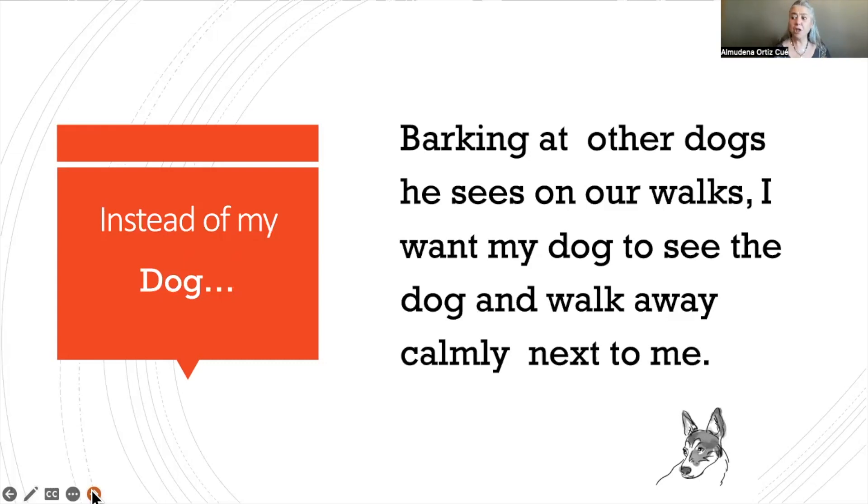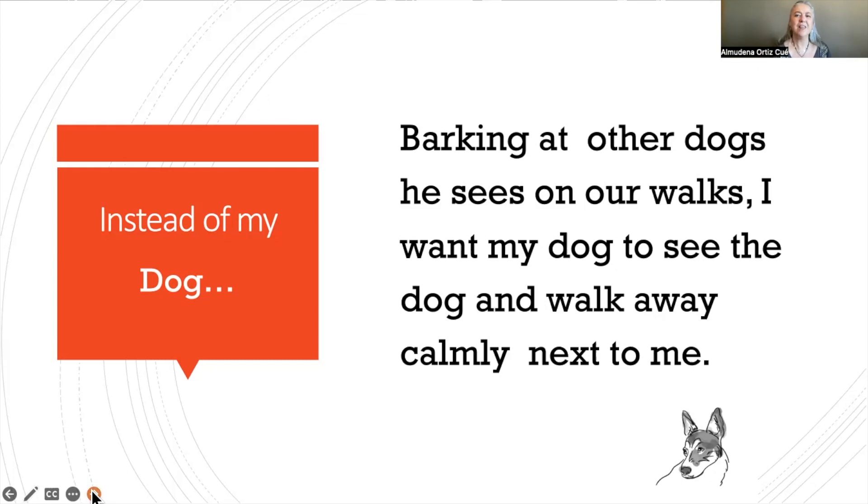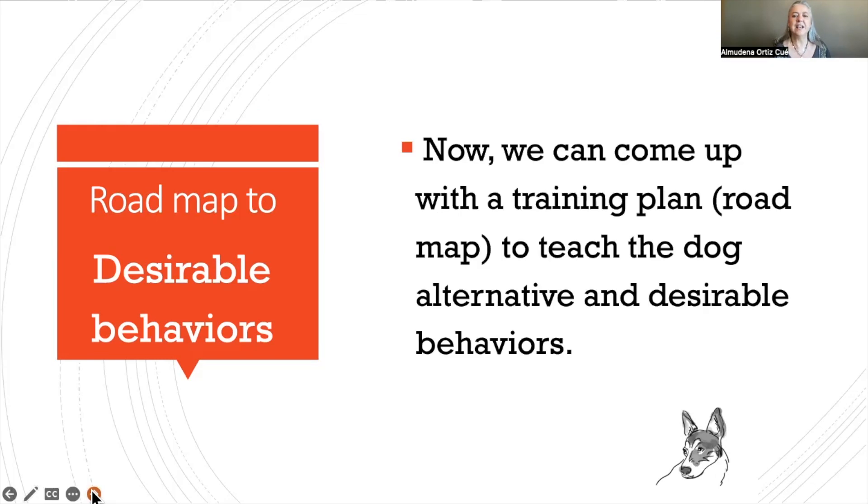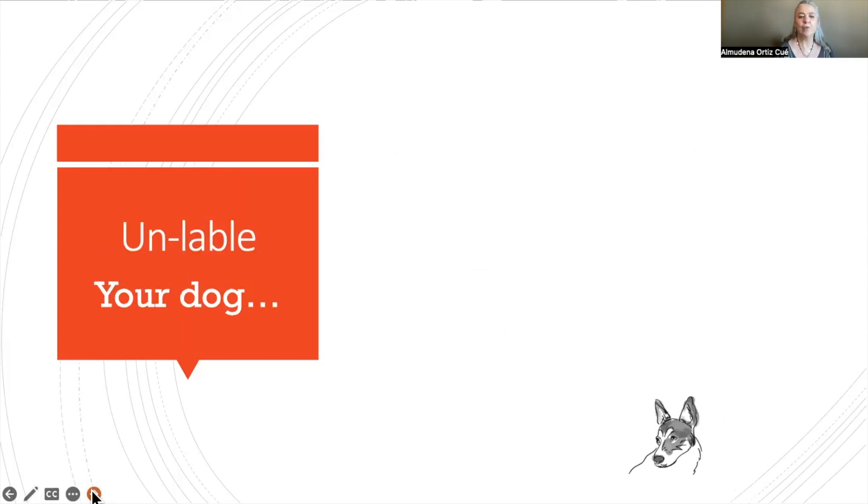So here, instead of seeing another dog and starting to bark at that dog, lunging, and just getting overly excited about seeing the other dog, I want my dog to see another dog and be able to walk away with me calmly. Those are specific behaviors that now we can begin to have a roadmap or technically a training plan so that we know this is what the dog is doing now, and what is it that I want the dog to do instead. And we can look to start training those alternative and desirable behaviors.